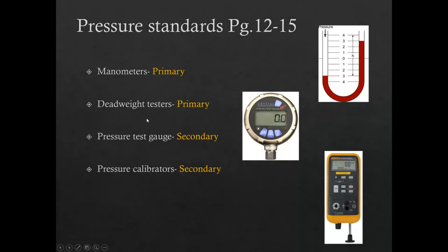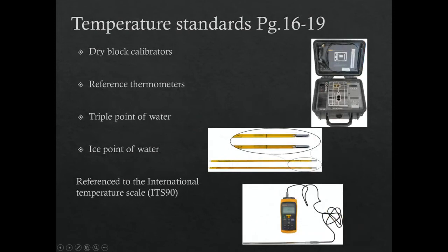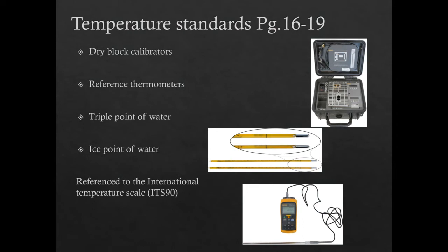A general guideline: if a standard has to be calibrated regularly, it's probably a secondary standard; if it only has to be calibrated occasionally or never, it's closer to the top and more likely a primary standard. Temperature standards we're familiar with include dry block calibrators, reference thermometers, and RTD or thermocouple additions to electronic meters.